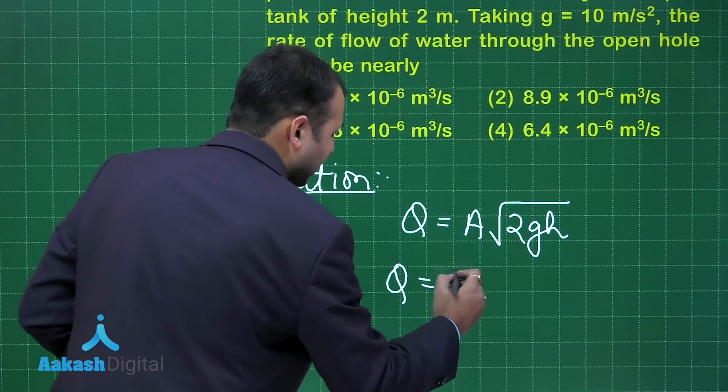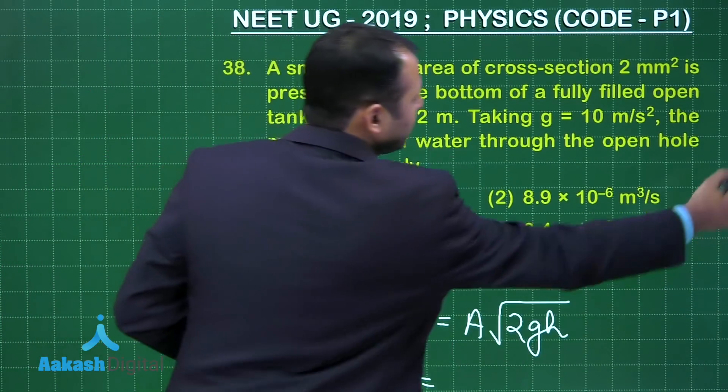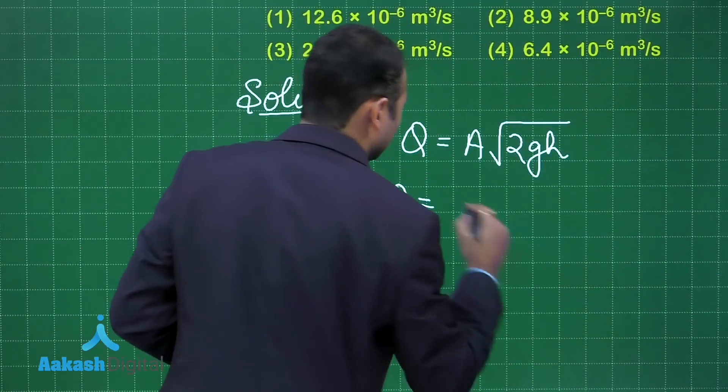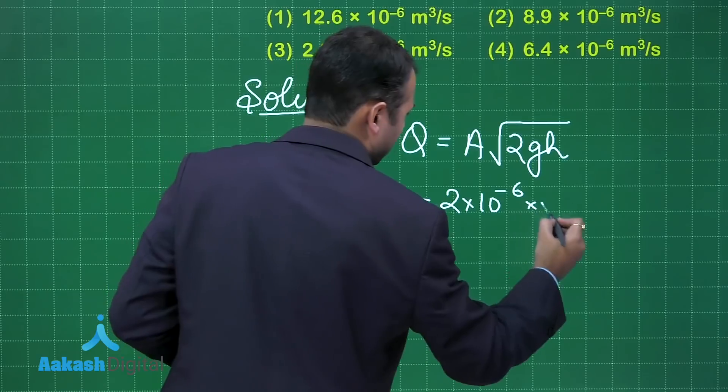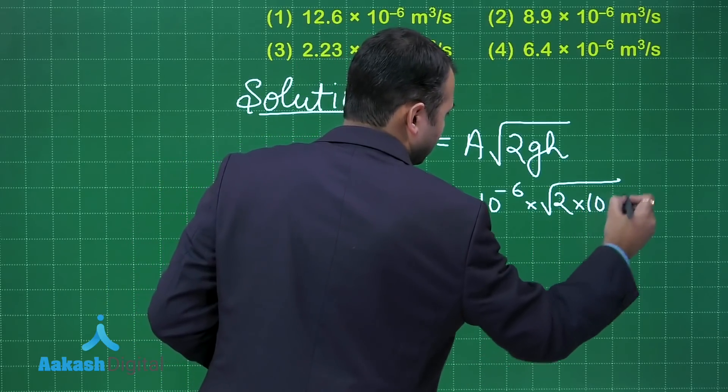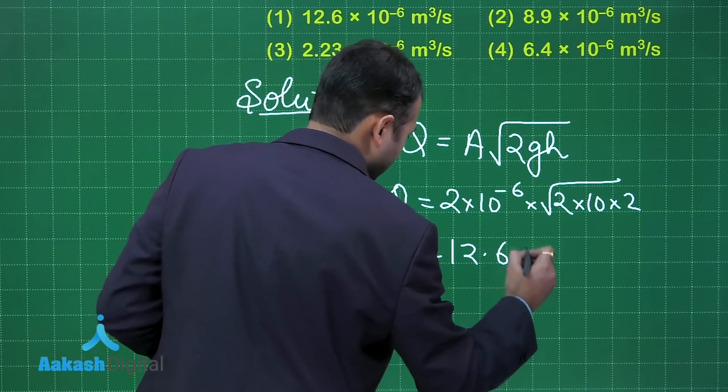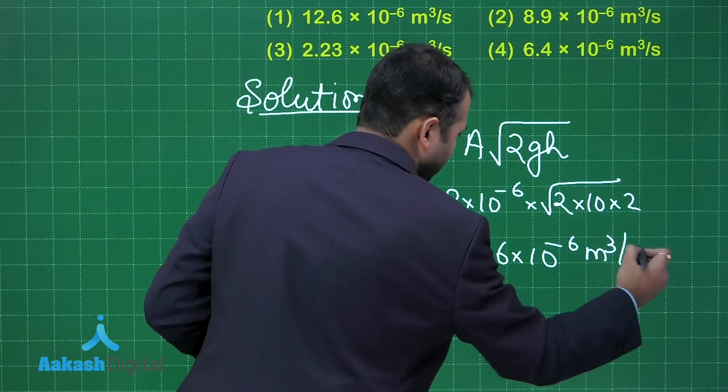So let's put down the values. Area of this hole is given to be 2 mm square. Right. And height was given to be 2 meters. So this is 2 into 10 to the power minus 6 into under root of 2 into 10 into 2. When you solve this you will get 12.6 into 10 to the power minus 6 meter cube per second.